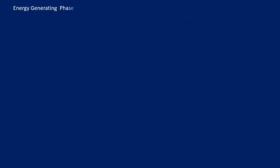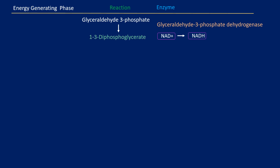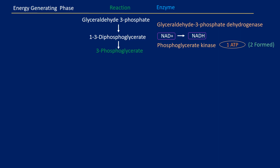During the first step of the energy-generating phase, the enzyme glyceraldehyde-3-phosphate dehydrogenase metabolizes glyceraldehyde-3-phosphate into 1,3-diphosphoglycerate by reducing NAD+ into NADH. Next, the 1,3-diphosphoglycerate loses a phosphate group by the action of the enzyme phosphoglycerate kinase to make 3-phosphoglycerate and creates an ATP through substrate-level phosphorylation. At this point, there are two ATP created, one from each 3-carbon molecule.